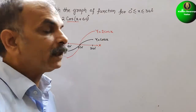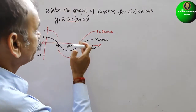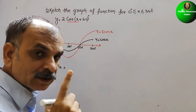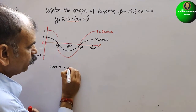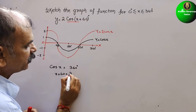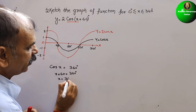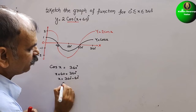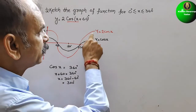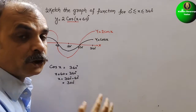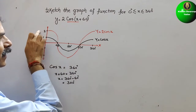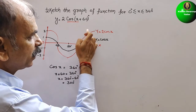Now we will make the full graph. They have given x + 60°. We know that cos x completes a full cycle in 360°. So for cos(x + 60°), x + 60° = 360°, which gives x = 360° − 60° = 300°. That means we have to complete the full cycle by 300°, which is a shifting of this wave to the left.